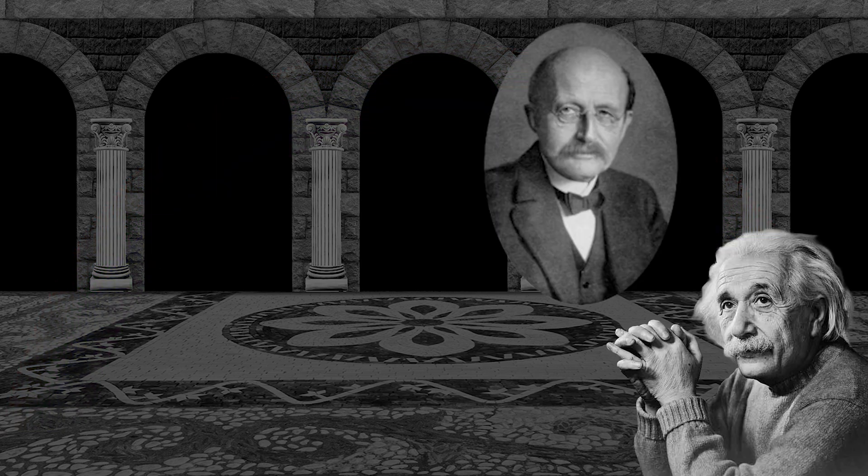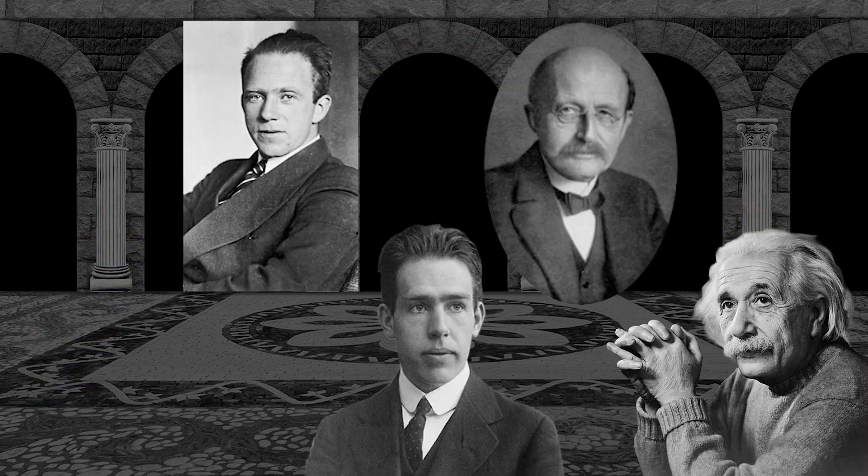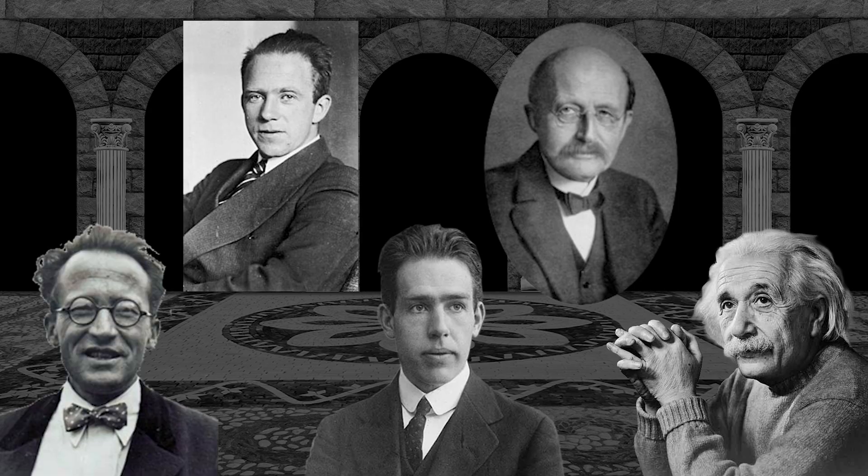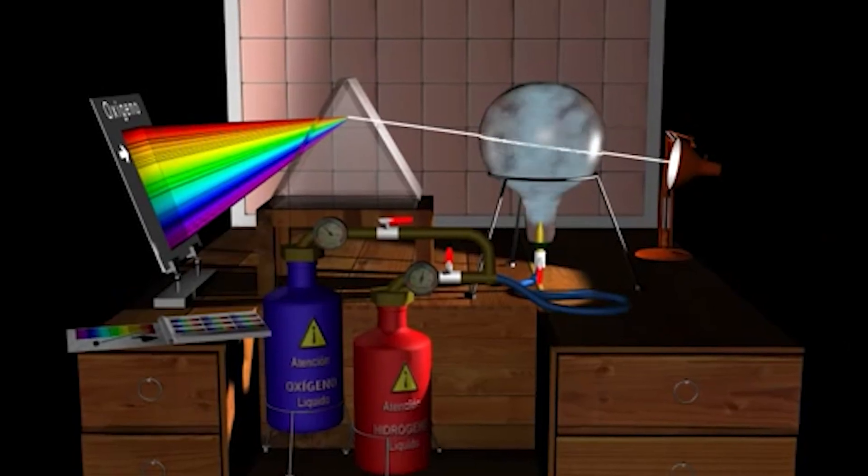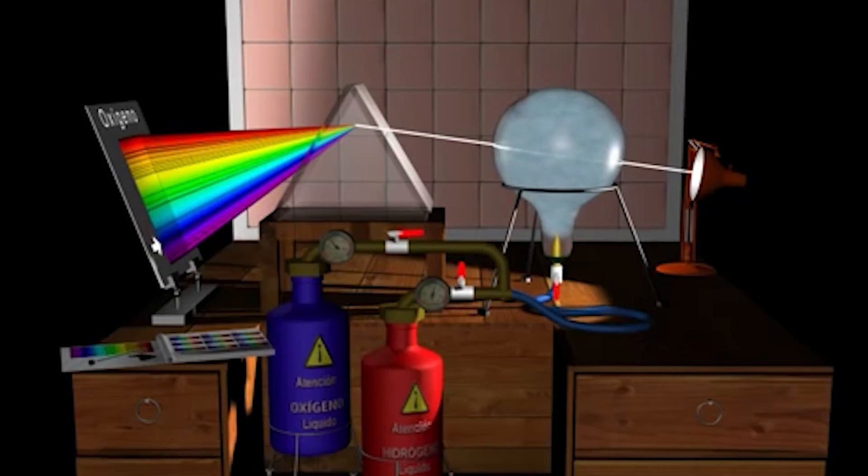Many scientists, including Max Planck, Albert Einstein, Niels Bohr, Werner Heisenberg, and Erwin Schrodinger, tried to solve the secret of the mysterious color lines in the early 20th century.